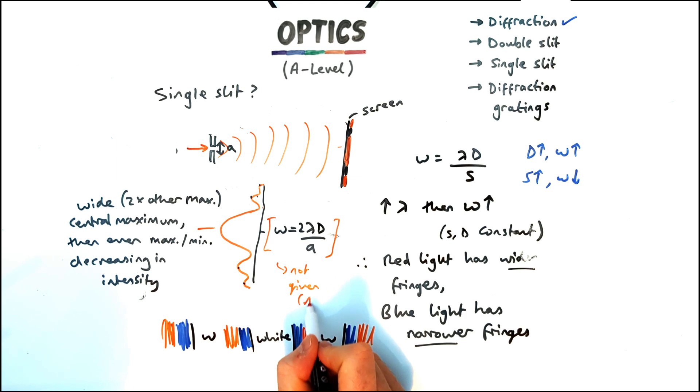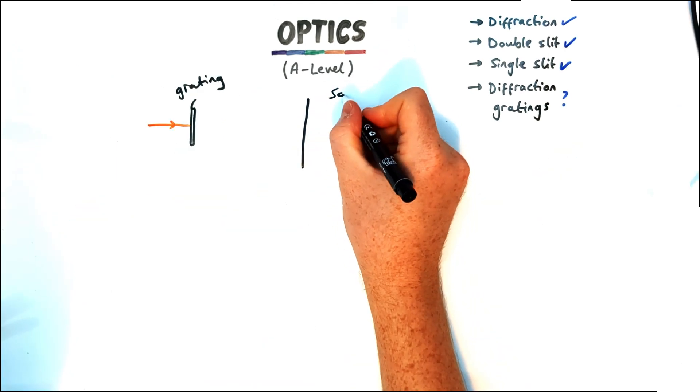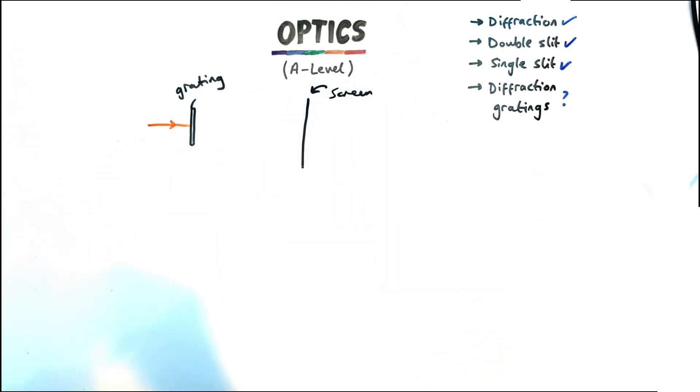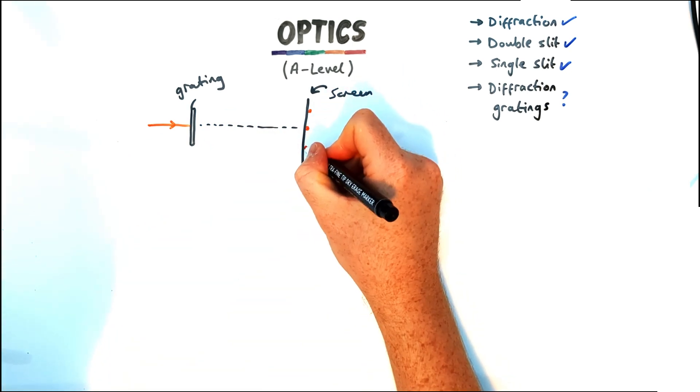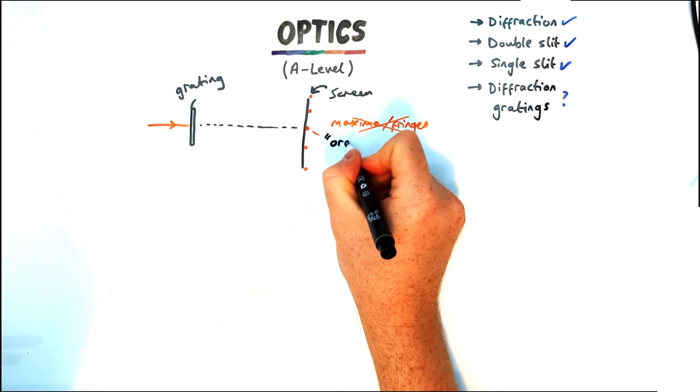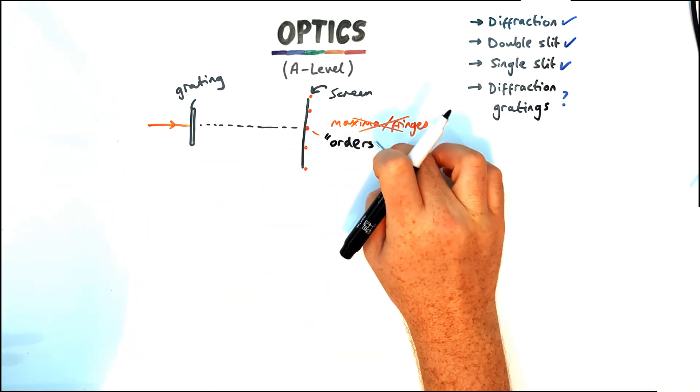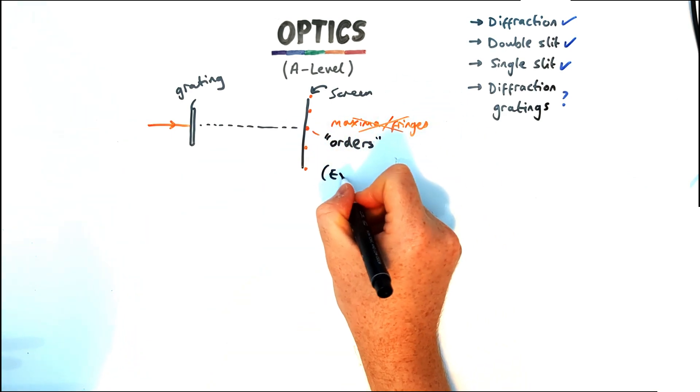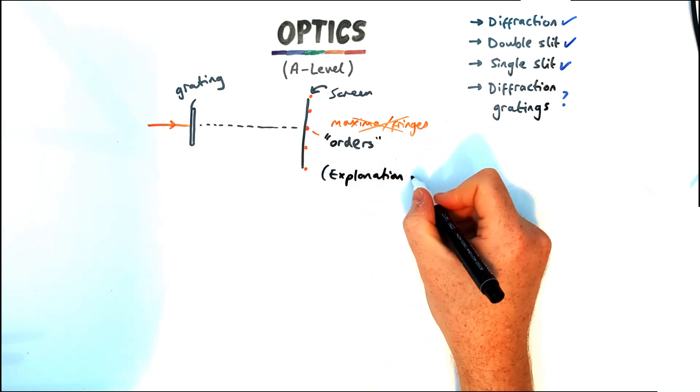So let's have a look finally at diffraction gratings. So diffraction gratings if you shine light through them you'll find a diffraction pattern but it won't be these fringes. They are called orders but they look kind of similar, they are more spread out and they have a high intensity and the explanation for how they form is exactly the same as for our double slit equation.